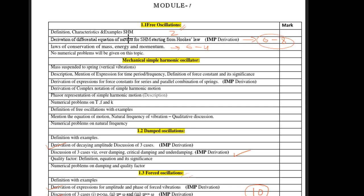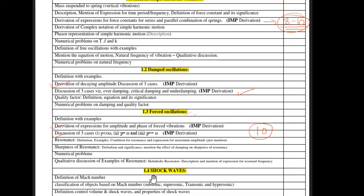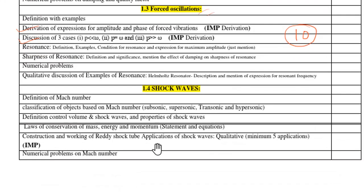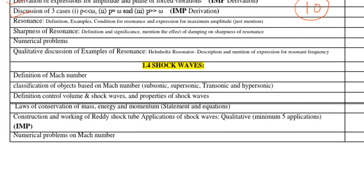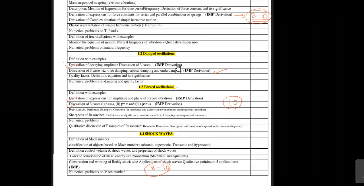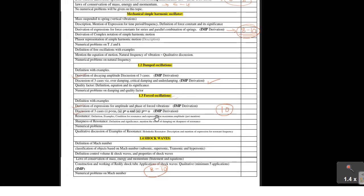In the mechanical simple harmonic oscillator chapter, there is one more derivation that can carry eight to ten marks. Wherever I mention 'important derivation,' you can expect eight to ten marks in semester exams. Another important chapter is shock waves — the construction and working of the Reddy shock wave tube is a very important topic and you can definitely expect eight to ten marks from it.